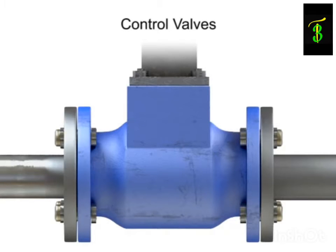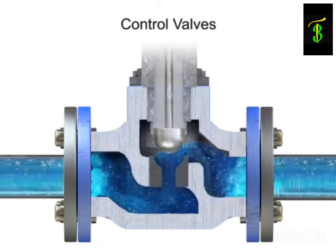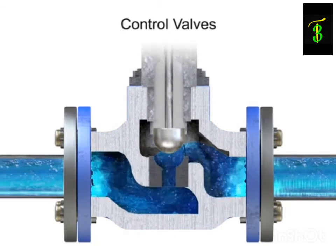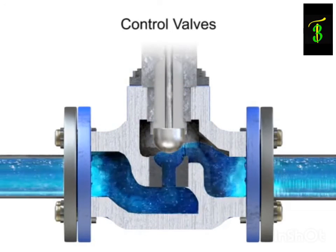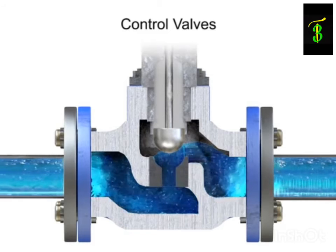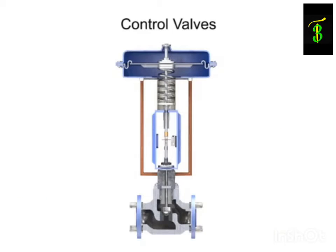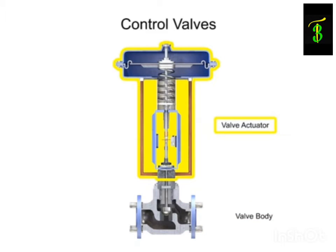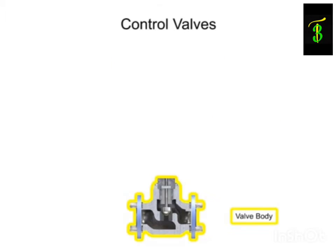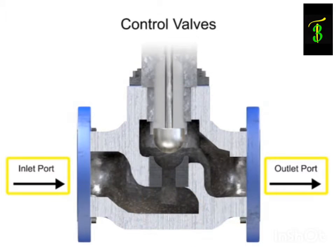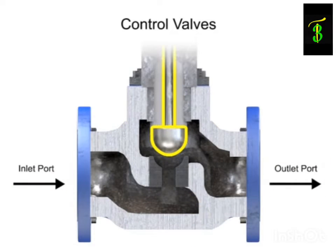Control valve actuators control fluid in a pipe by varying the orifice size through which the fluid flows. Control valves contain two major components: the valve body and the valve actuator. The valve body provides the fluid connections and a movable restrictor comprised of a valve stem and plug that is in contact with the fluid that varies the flow.